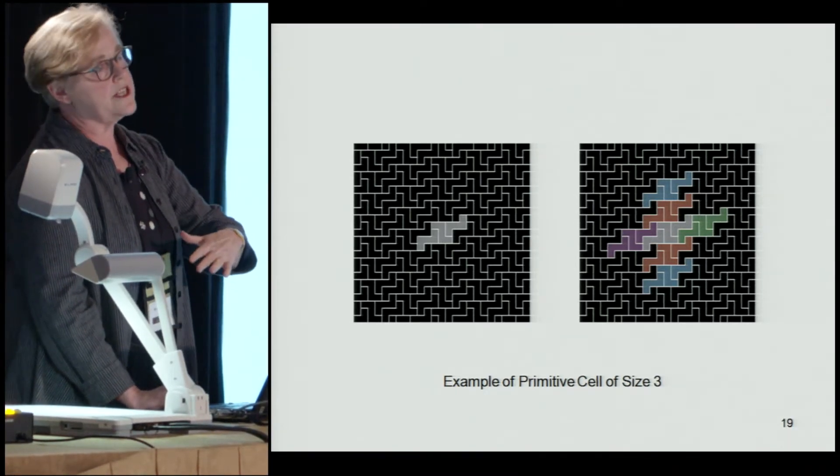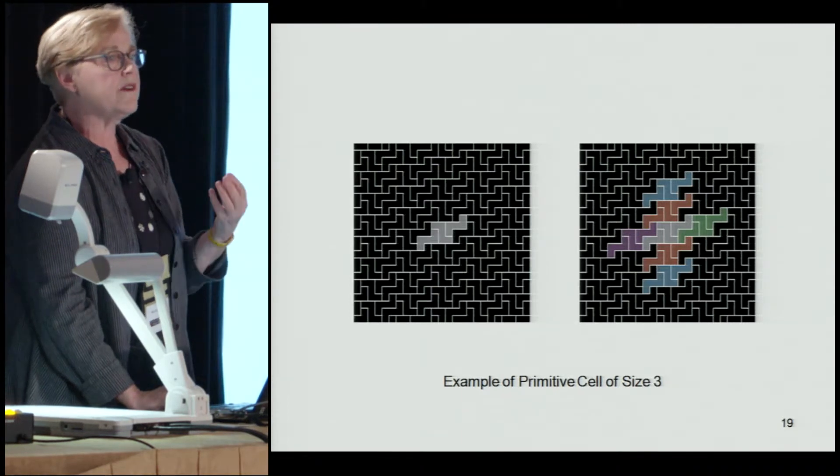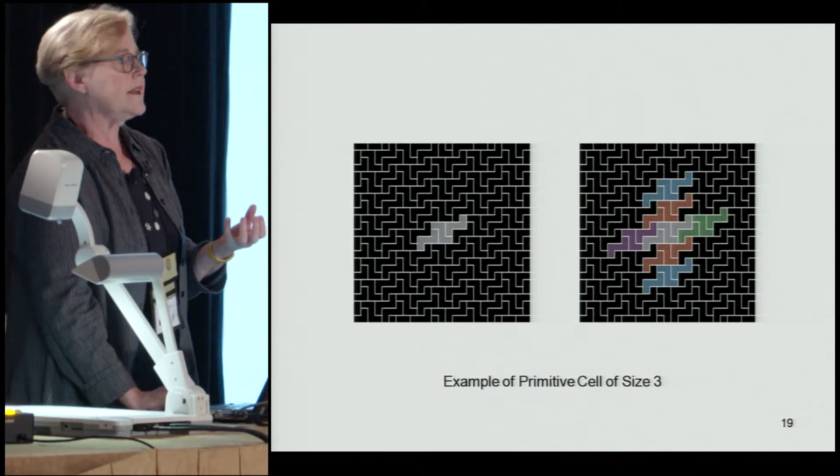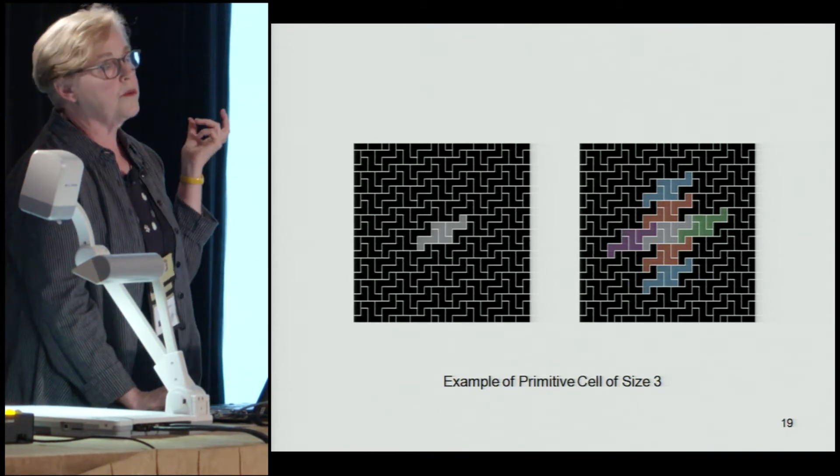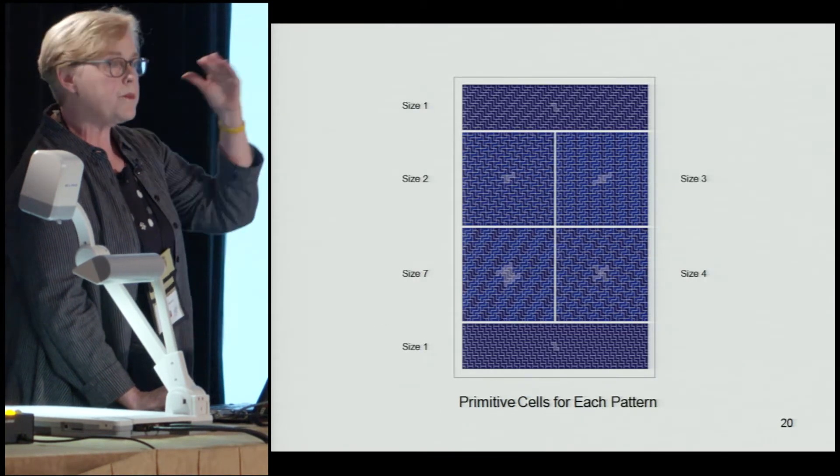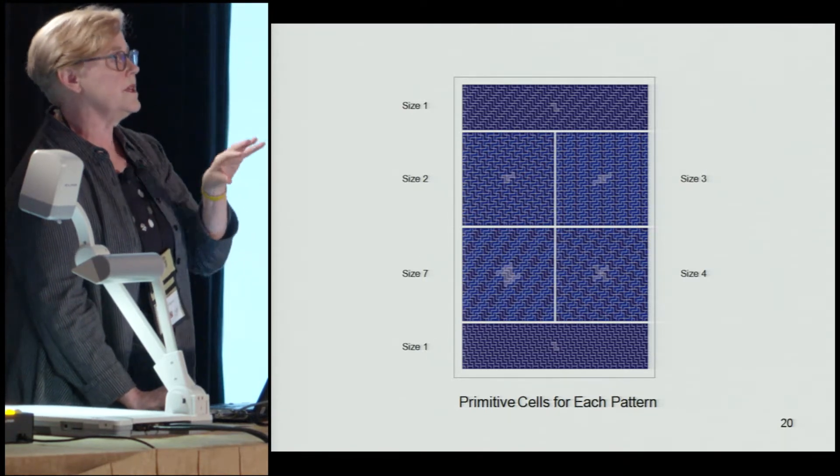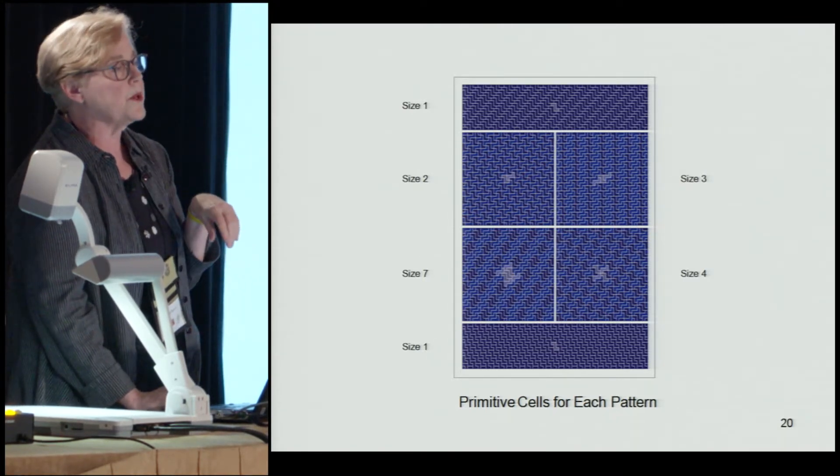In this case, this example needs three Z's to form a primitive cell. So I put the primitive cells as sort of a visual element in the middle of each pattern in lighter shades of blue.